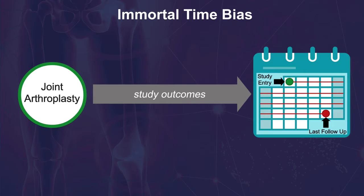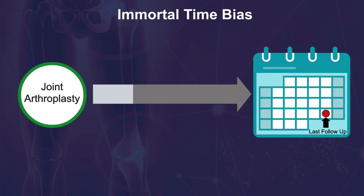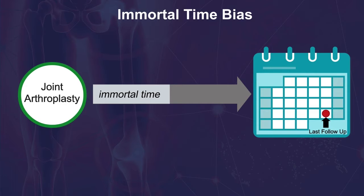In this setting, immortal time bias can arise when comparison groups are defined based on future knowledge. The term immortal time applies to a period of time between the beginning of the study and last follow-up in which neither death nor the study outcome can occur. This happens when subjects are divided into comparison groups based on a risk factor that is unknown at study entry but is identified at a later point during follow-up.